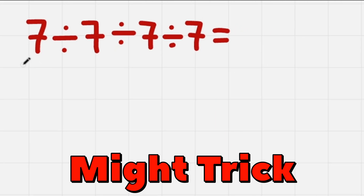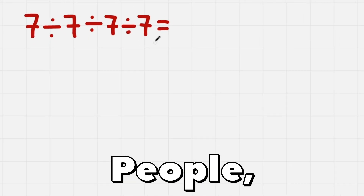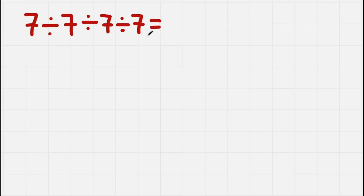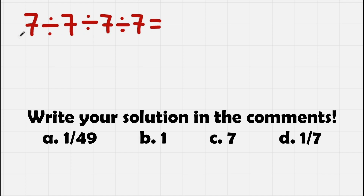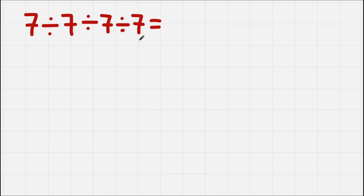This equation might trick a lot of people because it might seem really difficult, but I'm going to show you a trick that makes it much easier, so watch to the end. We have 7 divided by 7 divided by 7 divided by 7, so let's solve this.